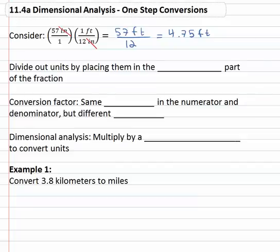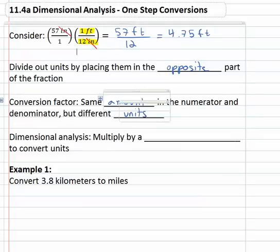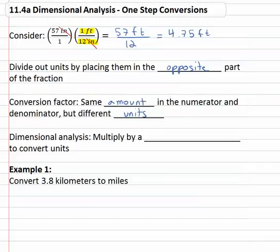This means we can divide out units by placing them in the opposite part of the fraction. We'll do this to set up what's called a conversion factor. Now a conversion factor is the same amount in both the numerator and denominator, but we use different units. In the example we saw above, 1 foot and 12 inches are the same amount, they're the same distance, but they use different units.